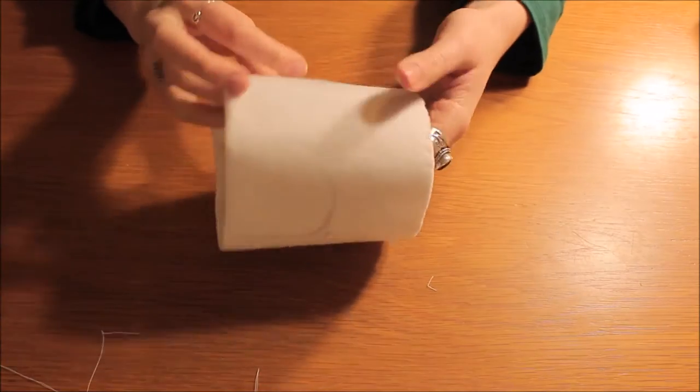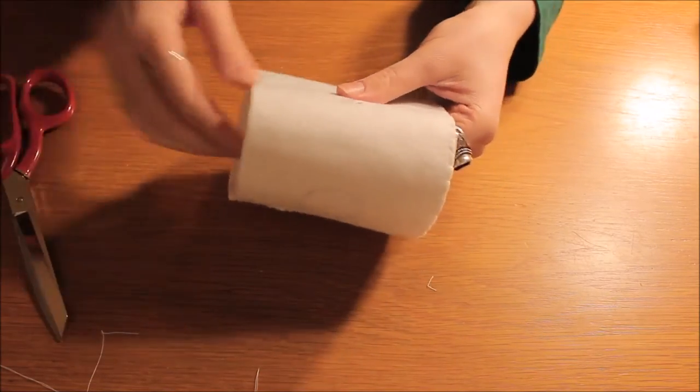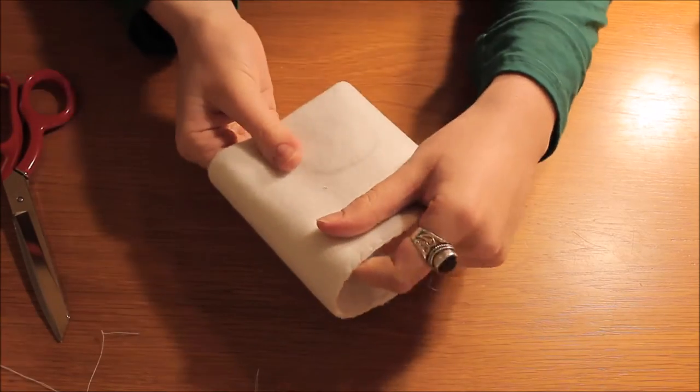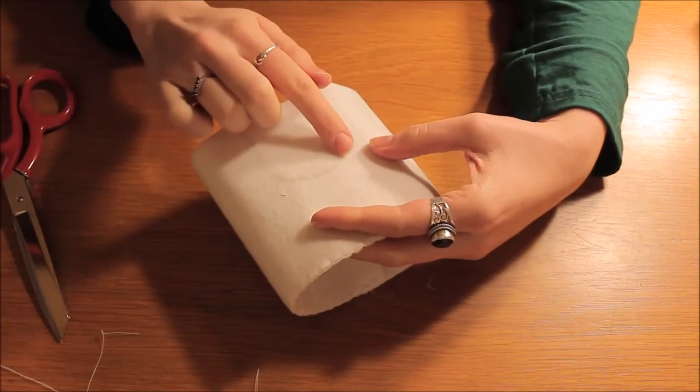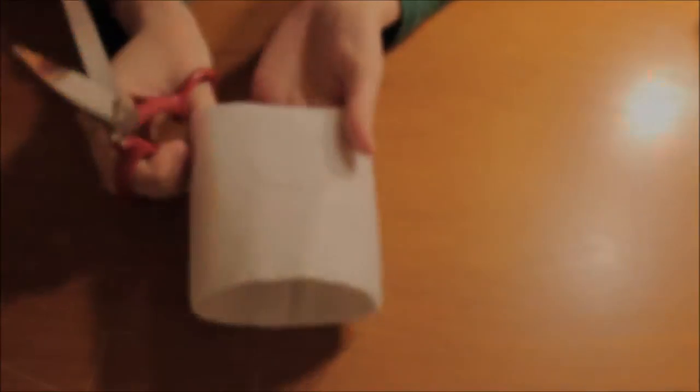I'm now going to cut out the windows and the door. When you cut out the door, you only cut where the pattern is marked because you want to leave this bit joined so the door can open and close.